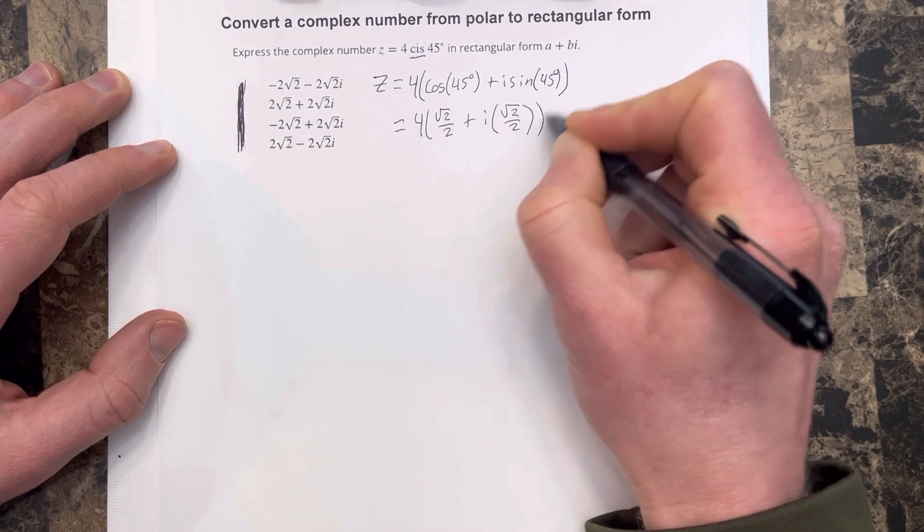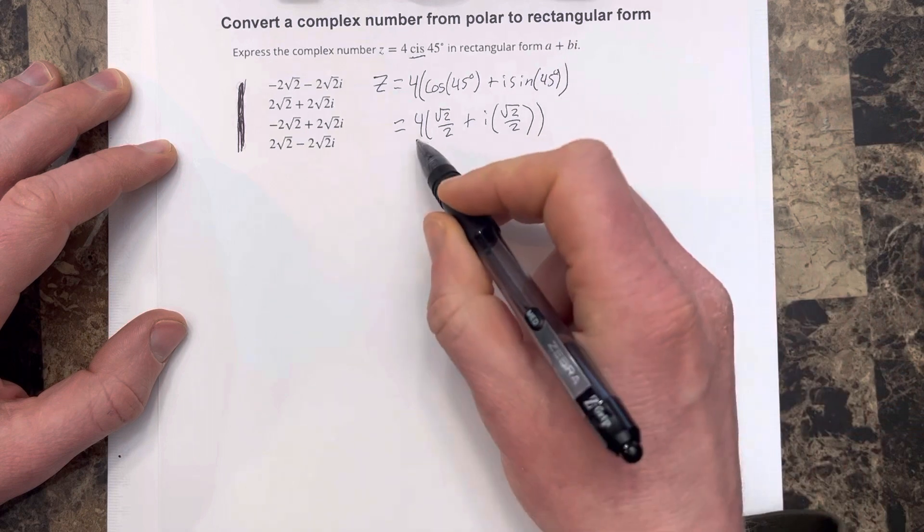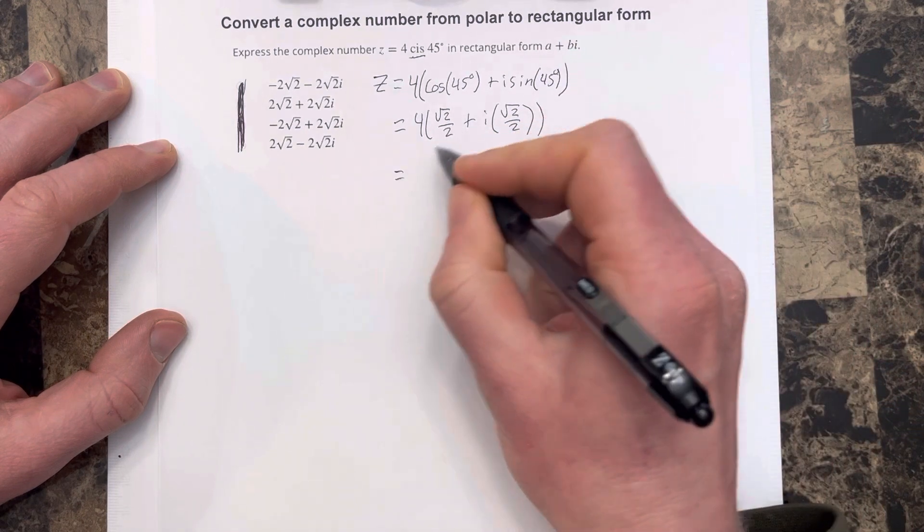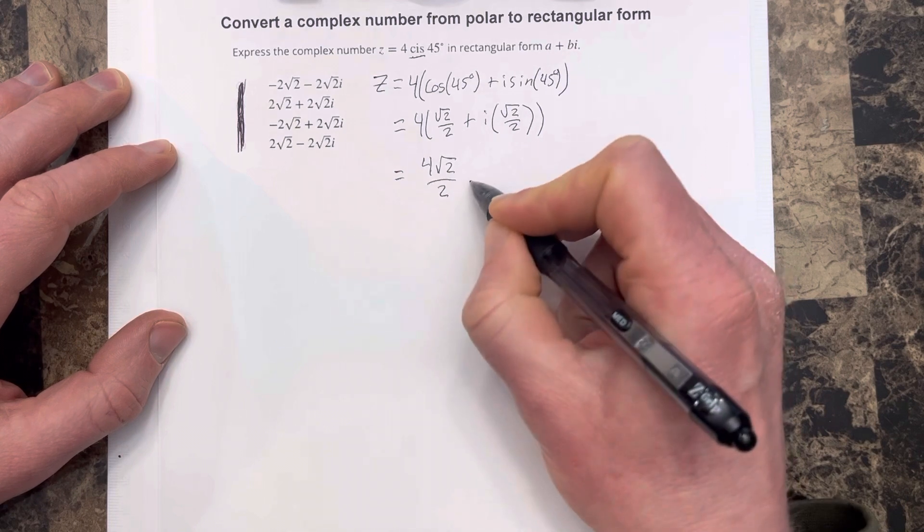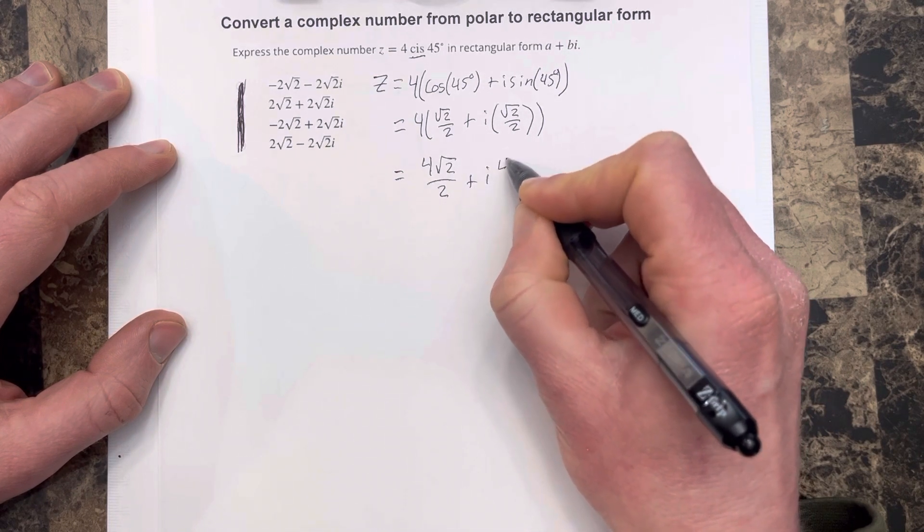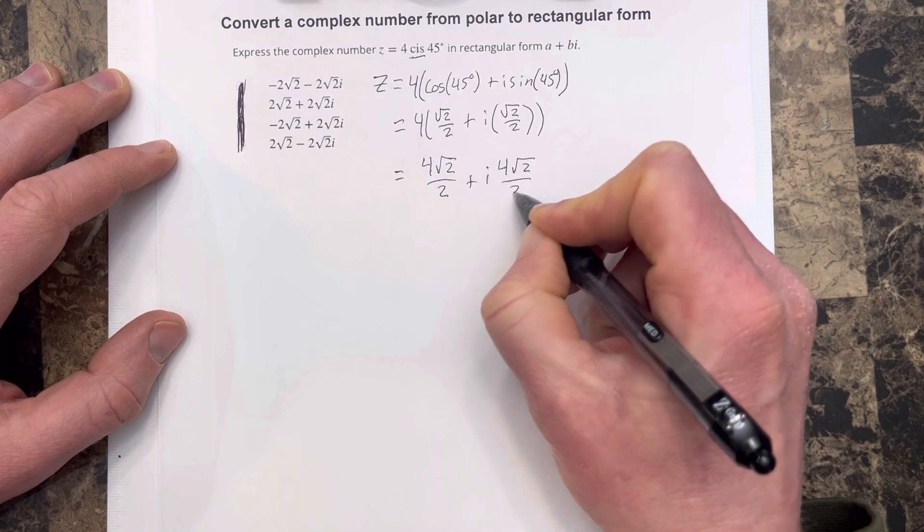We're trying to get to this A plus B I form, so we need to distribute the 4, and we get 4 root 2 over 2 plus I times 4 root 2 over 2.